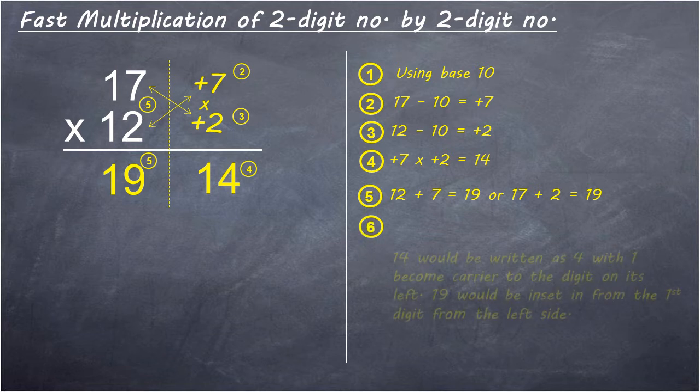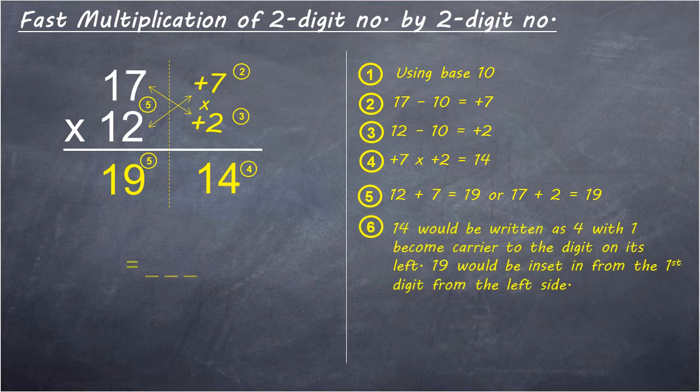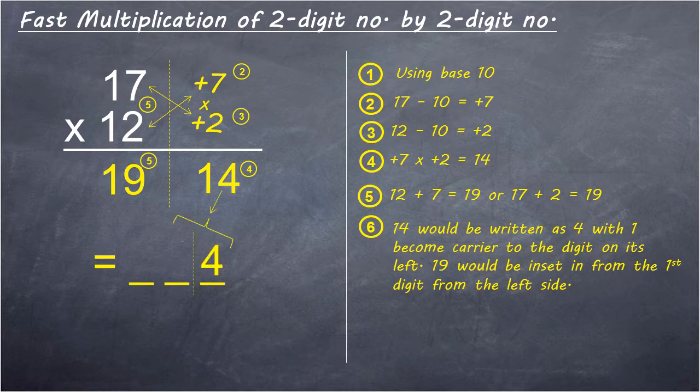Step 6: 14 would be written as 4 with 1 become carrier to the digit on its left. 19 would be inset in from the first digit from the left side.